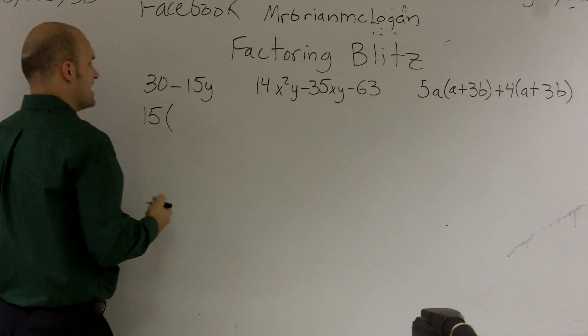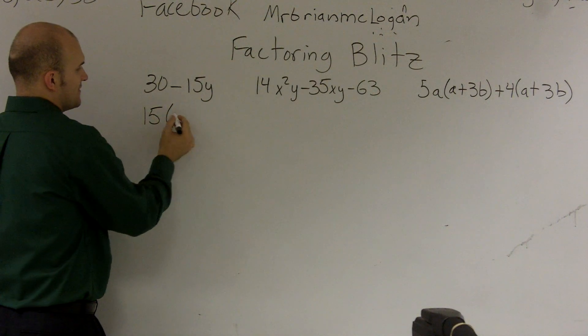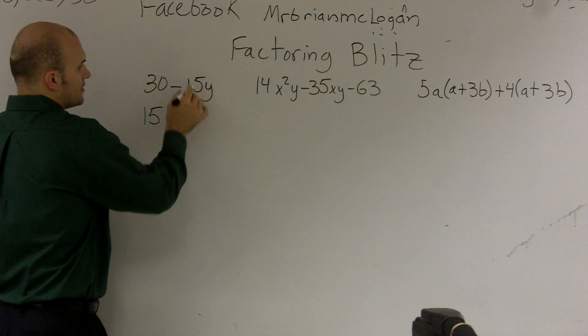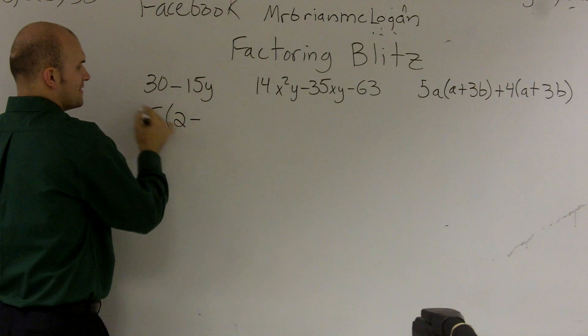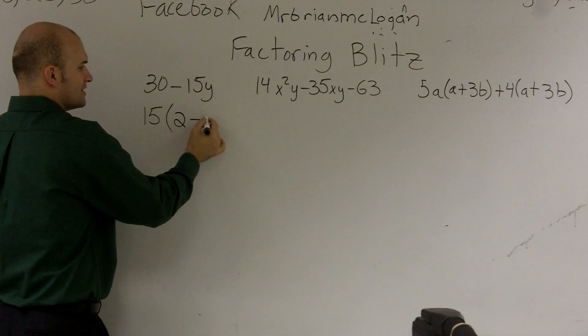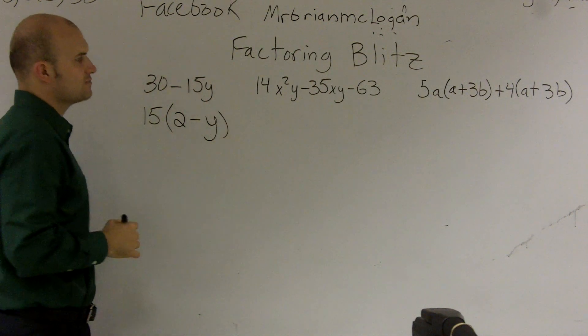And factoring now is just like dividing out. So 30 divided by 15 is going to leave me with 2. Minus 15 divided by 15, factoring out of 15, I'll be left with 1. I don't need to write the 1, so I'm left with 2 minus y.